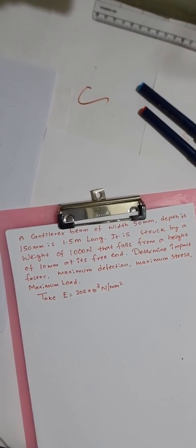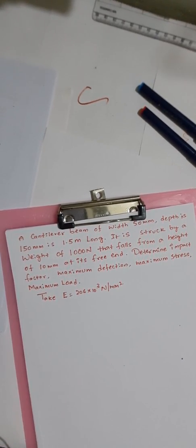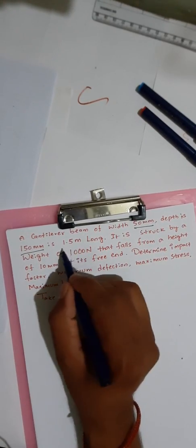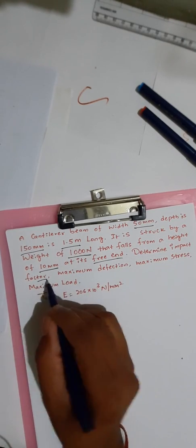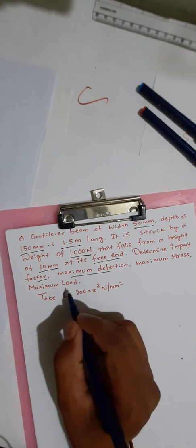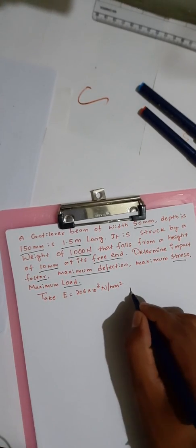Now we will discuss one more very important problem subjected to impact loading. First let us understand the given problem: a cantilever beam of width 50 mm, depth 150 mm, is 1.5 meter long. It is struck by a weight of 1000 newtons that falls from a height of 10 mm at its free end. Determine the impact factor, maximum deflection, maximum stress, and maximum load.